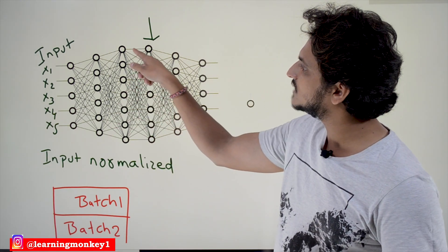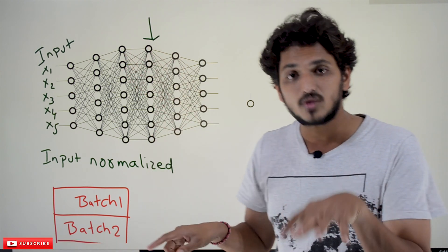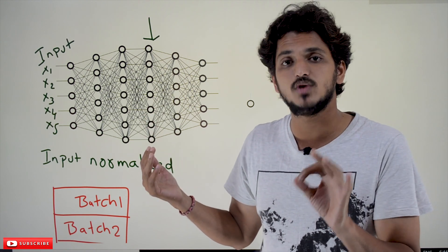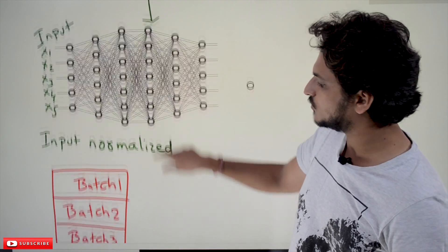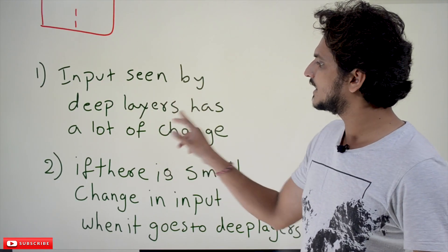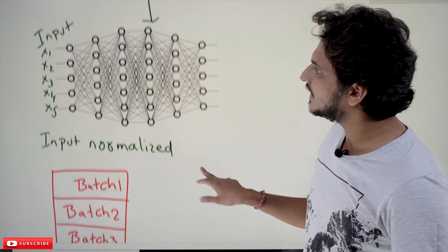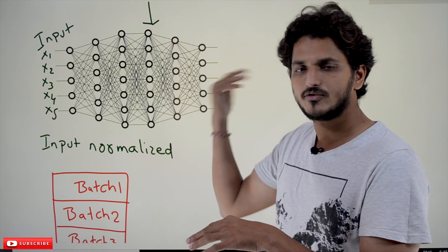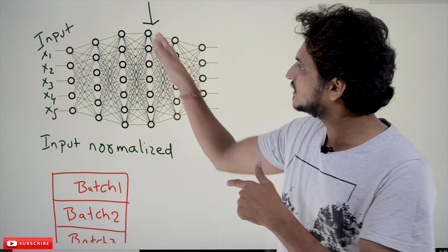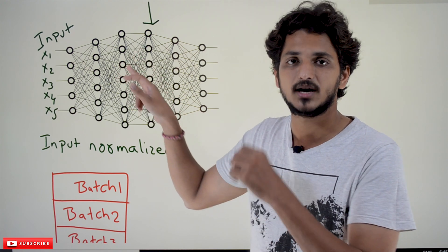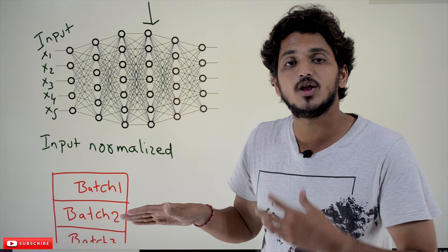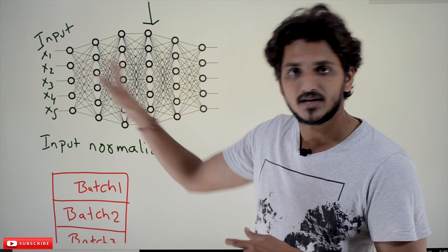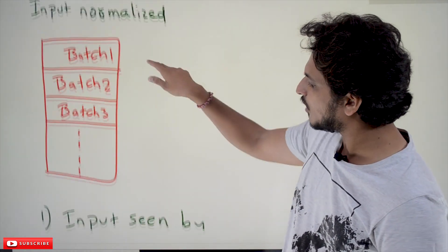The output from the second layer is taken as input to the third layer. We are doing a lot of multiplication with weights and summation across different layers. The first important point to understand is that the input seen by the deep layers has a lot of change. The input given at the input layer, when it goes to the deeper hidden layers — third, fourth, fifth — has undergone so much modification. The input seen at the third layer is very different compared to the original input at the first layer.